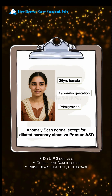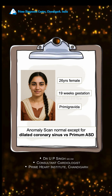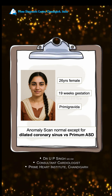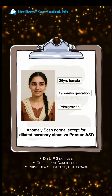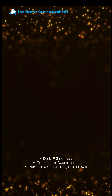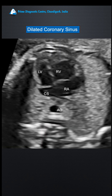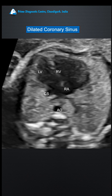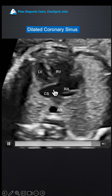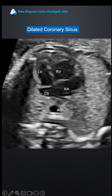At 19 weeks gestation, an anomaly scan showed a dilated coronary sinus. The issue was whether this was a primum ASD or a coronary sinus abnormality. What we saw was that there was a dilatation of the coronary sinus — you can see it here.